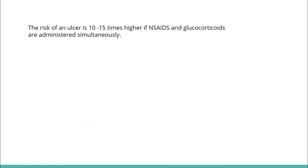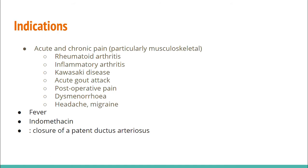The risk of ulcer is 10 to 15 times higher if NSAIDs and glucocorticoids are administered simultaneously. Indications for NSAIDs include acute and chronic pain, particularly musculoskeletal pain, rheumatoid arthritis, inflammatory arthritis, Kawasaki disease, acute gout attack, post-operative pain, dysmenorrhea, headache and migraine, fever, and endometriosis — including closure of the patent ductus arteriosus.